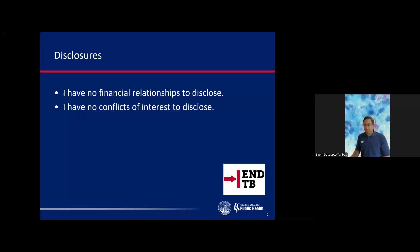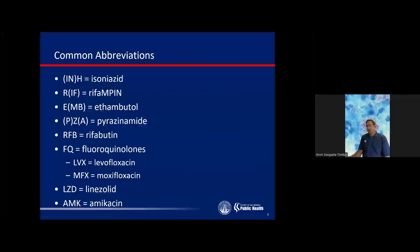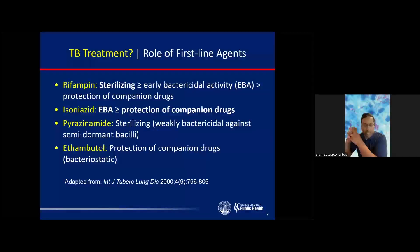I have no disclosures. Here are some learning objectives. Some common abbreviations I'll use in the slides: INH, RIF, EMB, PZA, sometimes referred to as HREZ, and some other abbreviations for second-line drugs. When talking about potential drug-induced liver injury due to first-line TB agents, going back to basic principles is really important — thinking about how we approximate the effects of first-line drugs and how second-line agents respond to those same prerogatives.